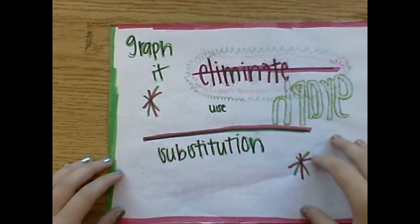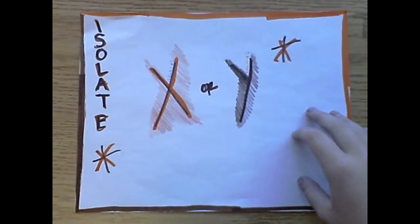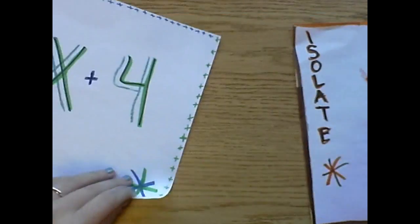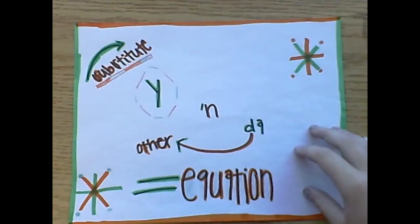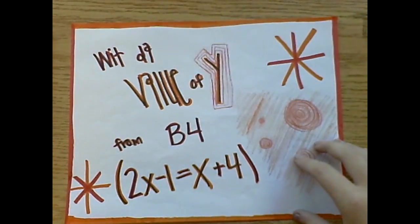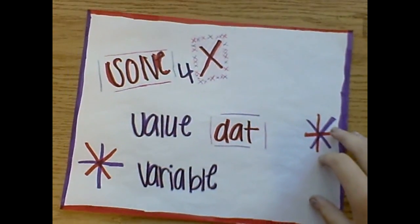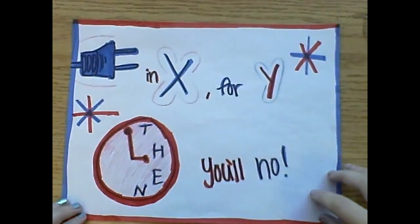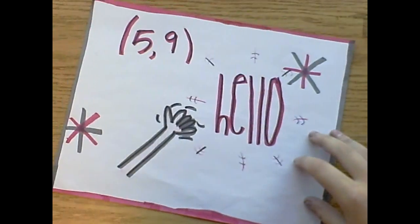To get a solution, graph, eliminate, or use substitution. Isolate the X or the Y — Y equals X plus 4. Substitute the Y in the other equation with the value of Y from before: 2X minus 1 equals X plus 4. Solve for X, value that variable. Plug in X to solve for Y and you'll know 5 comma 9.